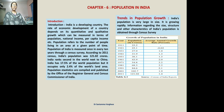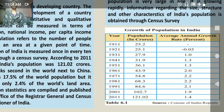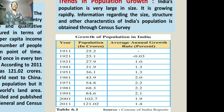India's population is very large in size and it's growing rapidly. Information regarding the size, structure, and other characteristics of India's population is subject to the census survey. As you can see in the slide, the population data from 1911 to 2011 is given. In 1911 the population was 25.2 crore. In 1921 it was 25.1 crore, with an average annual growth rate of minus 0.3 percent.